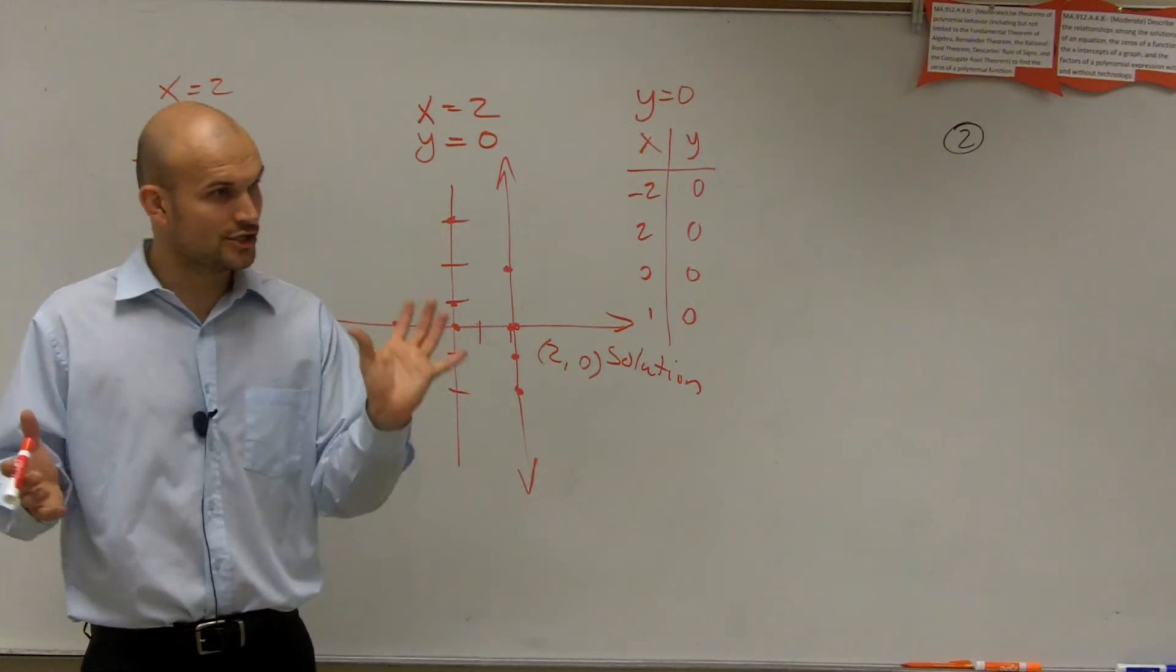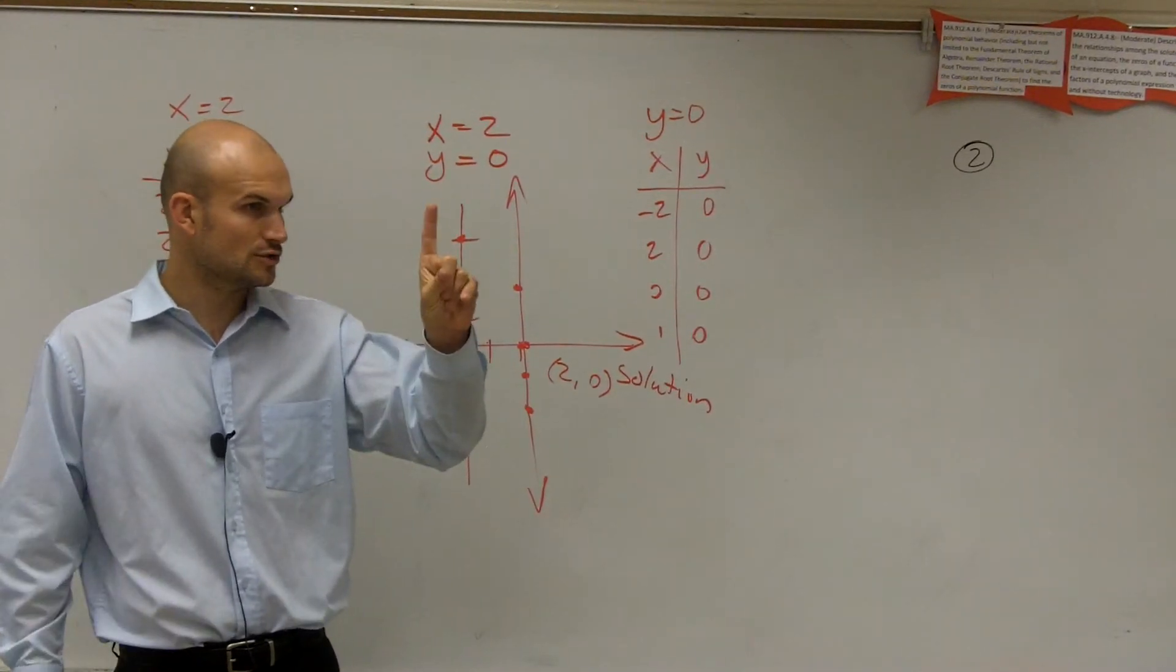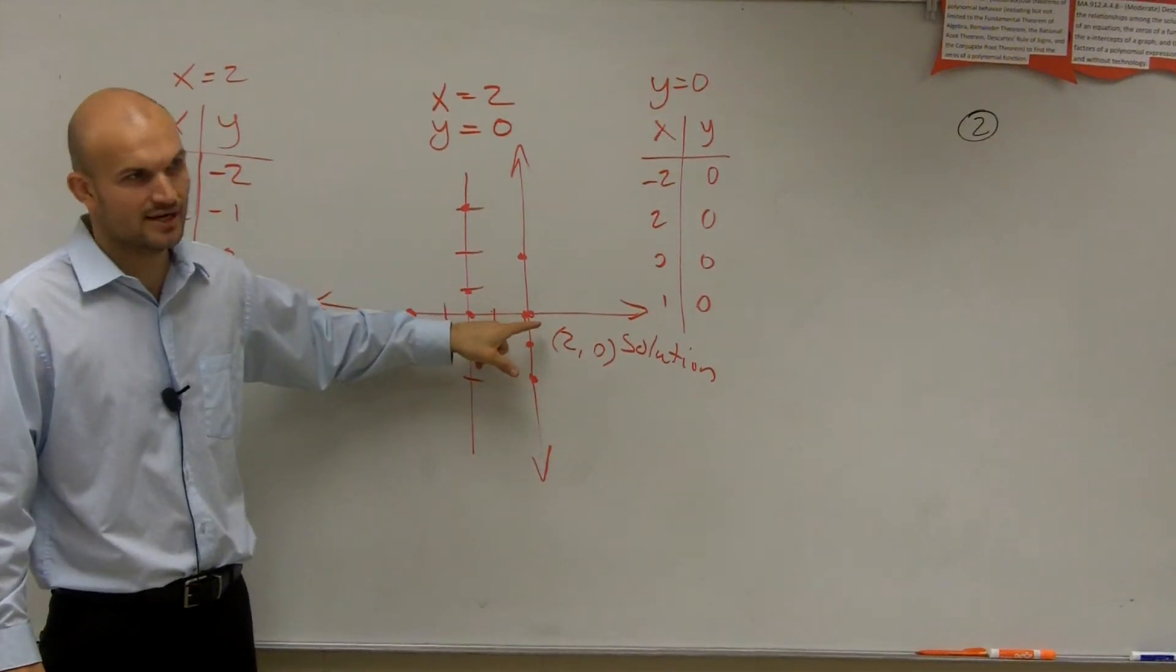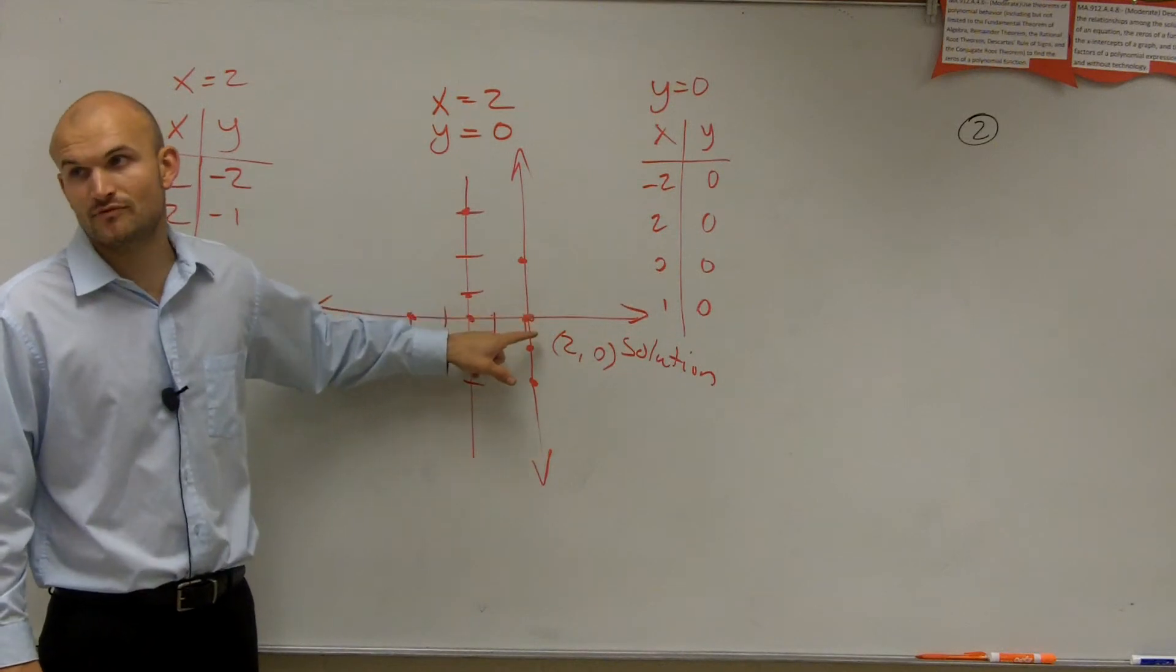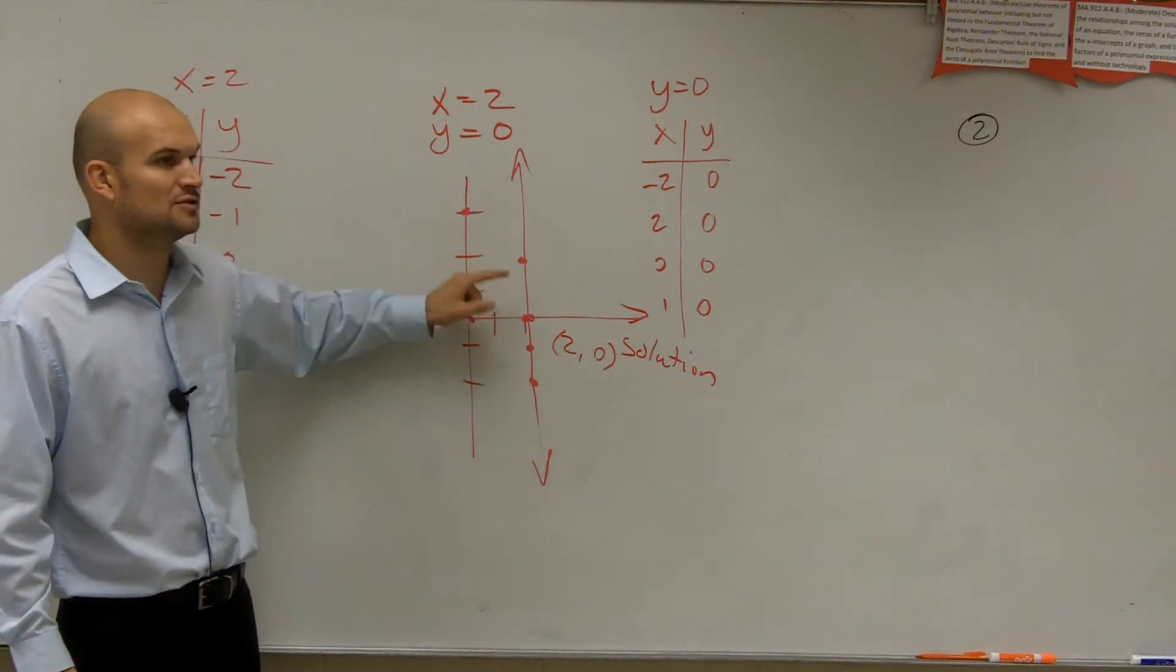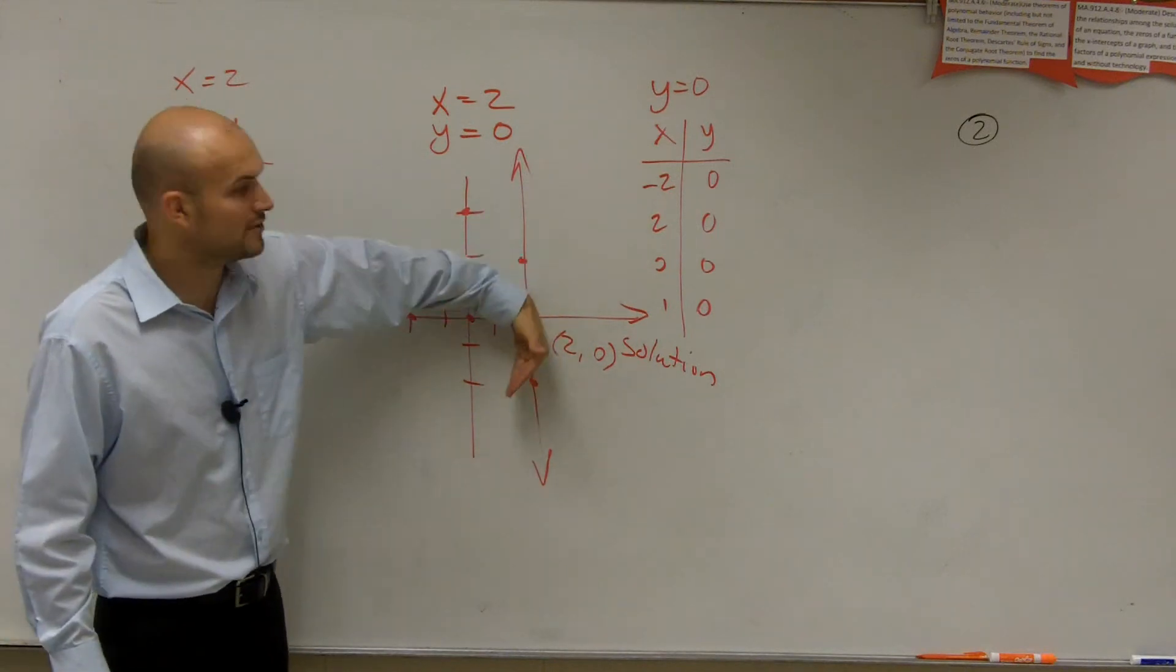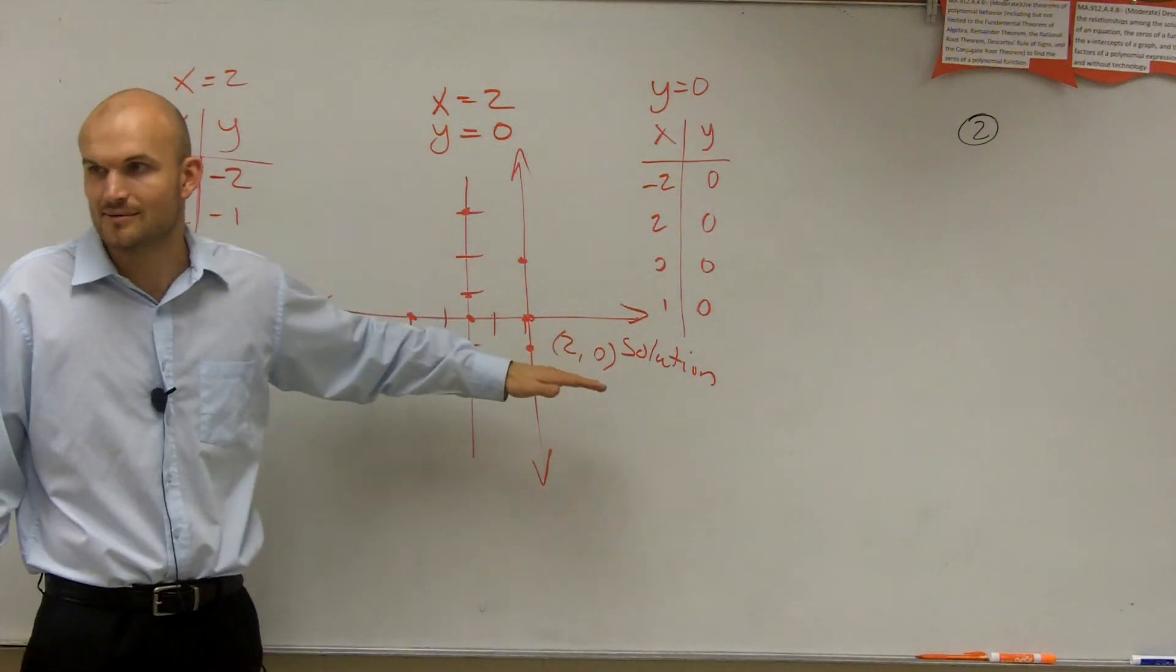Then under your consistent, you have two different types of solutions. You can have one solution. Or is it possible for these two lines to intersect once? Yes, right? Is it possible for them to intersect twice? No. Is it possible for two lines to intersect infinite many times? No. Well, if we put the line, if the lines are on top of each other, then they would intersect infinite many times.